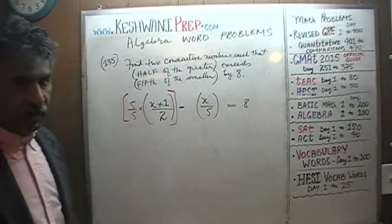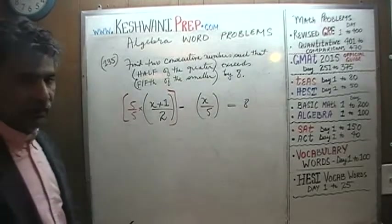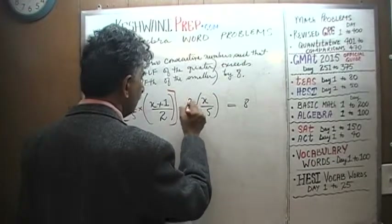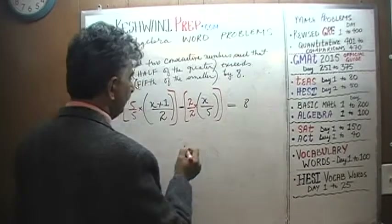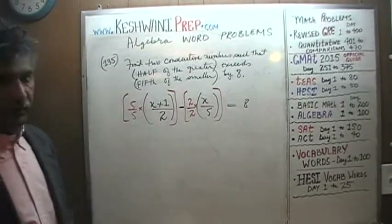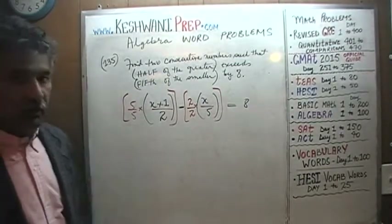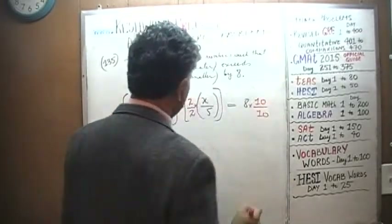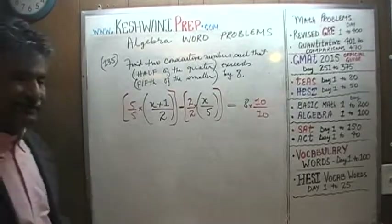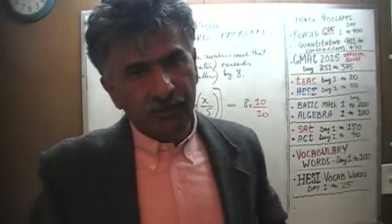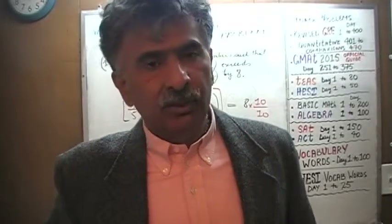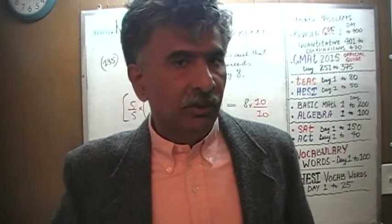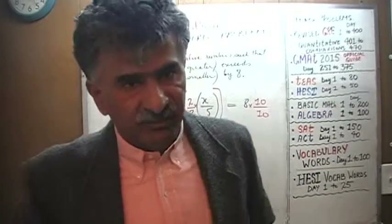This quantity has a denominator of five — we need a ten. How do we convert this into a ten? Very simple: take this quantity and multiply it by two over two. Now both of these quantities have a denominator of ten. We need a denominator of ten here as well, so let's multiply eight by ten over ten. Now since the entire equation has the same common denominator, we can simply ignore it.